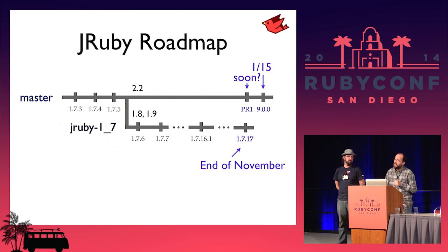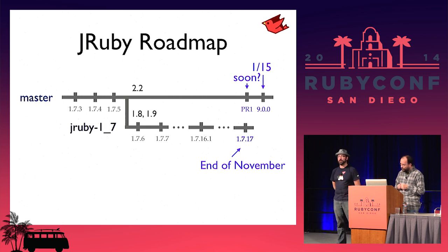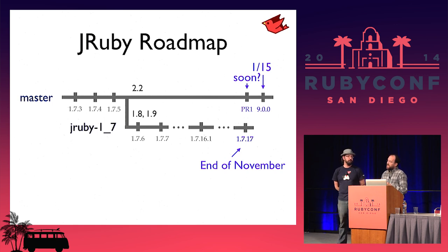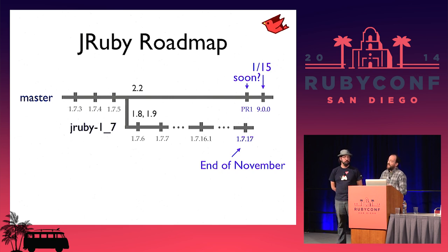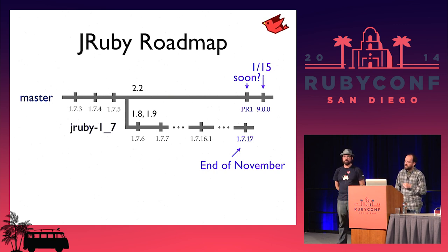We wanted to put out a preview release for this conference and didn't quite make it. But we decided that's a good thing because it gives everyone here an opportunity to try JRuby and give us feedback. We plan on having a final release towards the beginning of January, only a few weeks after CRuby puts out their 2.2 release. This is the first example I know of two implementations releasing that close together. We put out new 1.7 releases every three to six weeks, so you should see 1.7.17 next week.